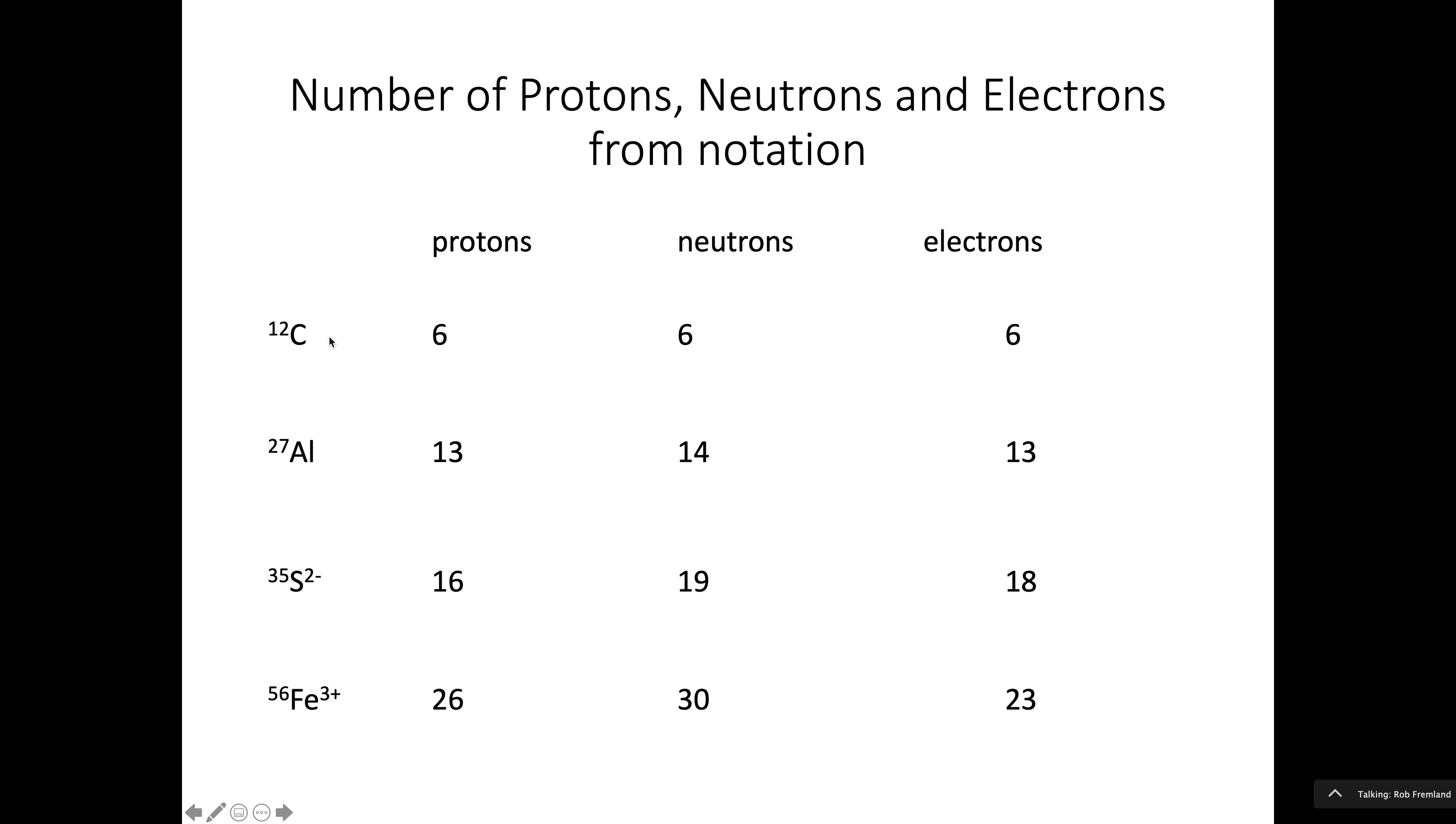To get the number of neutrons, this number here is the protons plus the neutrons. So there's 12 protons and neutrons. Six of them are protons. That means six must be neutrons. So 12 minus 6 is 6. Here, 27 minus 13 is 14. 35 minus 16 is 19. 56 minus 26 is 30. Always, always, always do the protons first.